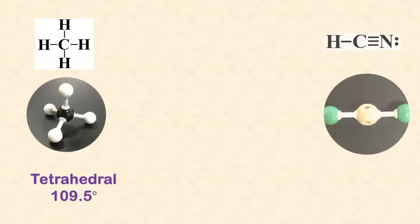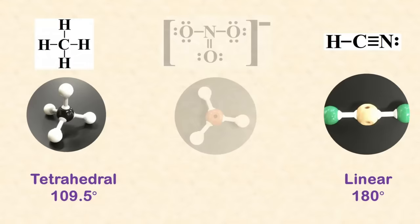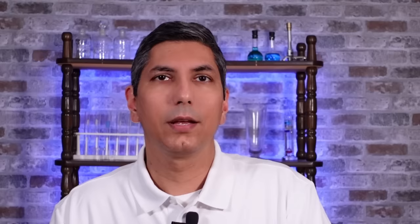These shapes have names. This molecule has a tetrahedral geometry, and a bond angle of 109.5 degrees. This geometry would be called linear, with a bond angle of 180 degrees. And this one is trigonal planar, 120 degrees.